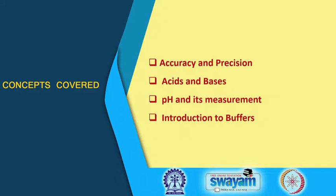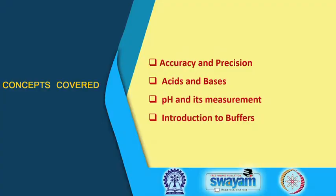For example, what do we mean by accuracy and precision? Measurements that we take — are they accurate or are they precise? Do these two mean the same things? Another very important aspect is about acids and bases, about pH, measurements of pH, and of course about buffers. We will go gradually today, and in the next lecture we will learn about the different types of buffers, how they can be prepared. Each of these topics will be demonstrated in the laboratory.